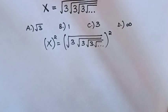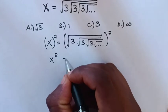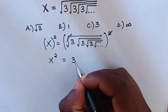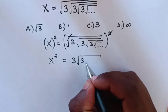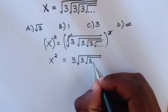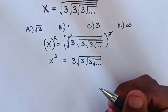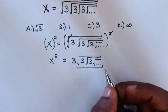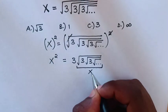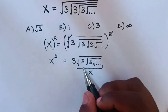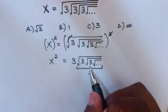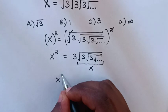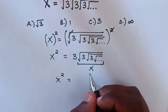Then our equation will be x squared is equal to — this square will cancel with this square root — so it will be equal to 3, square root of 3, square root of 3, square root of 3 and infinite. Whereas from here, we can see this is x from our problem, whereas x is equal to this square root of 3, square root of 3 and infinite. So here it will be x squared is equal to 3x.